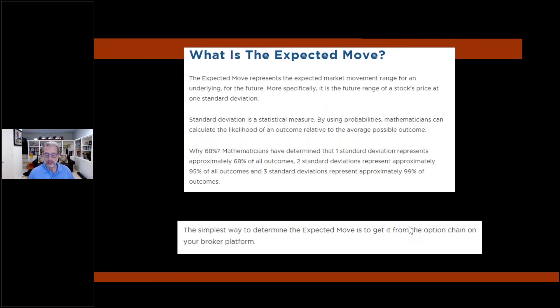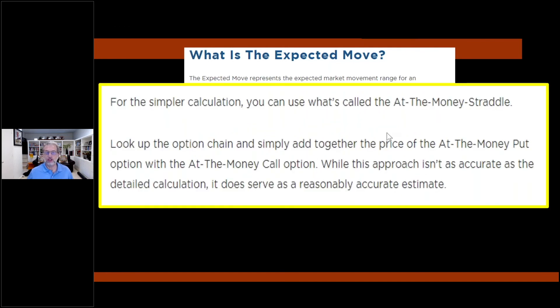Expected move. The simplest way, this is funny, the simplest way to determine the expected move is to get it off the option chain on your broker platform, which we all do. What's a proxy for that? So here's a simple way to calculate it yourself to make sure, to keep the brokers and the platforms honest. You can mathematically get close to, not exact, but close to, by looking at the pricing of an at-the-money straddle. What are you going to do? You're going to sell a call and you're going to sell a put at the money. You're going to add those two prices together, and you're going to look at that as an expected move and compare that to what the brokerage or the option chain is showing you on the platform.